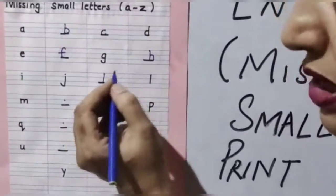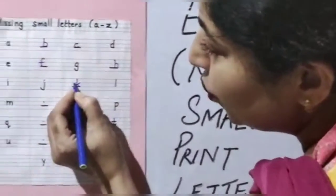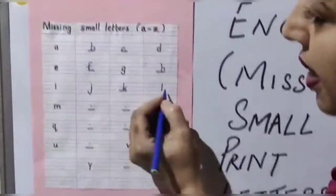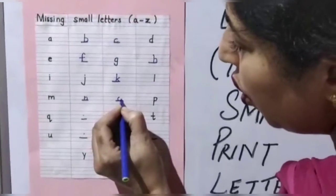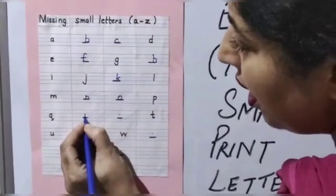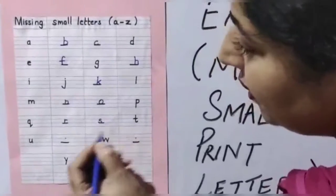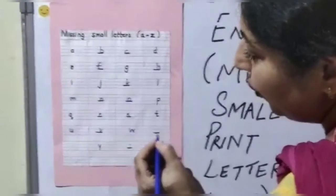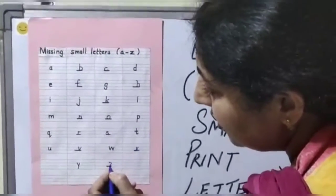Look at K very carefully. Children, you are making a mistake here. What comes in K? He has made two or three lines. K has slanting lines. L, M, N, O, P, Q, R and small S. T, U, V, W, X, Y and Z.